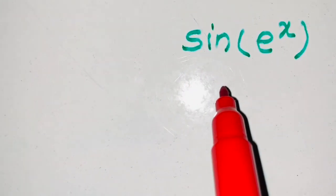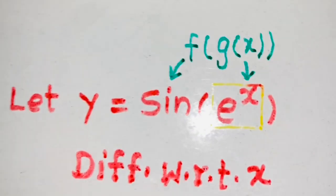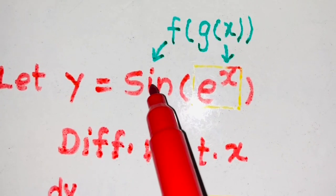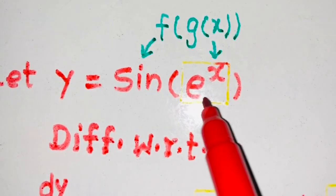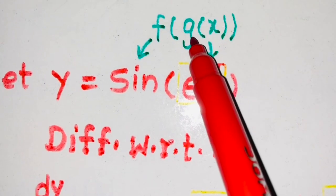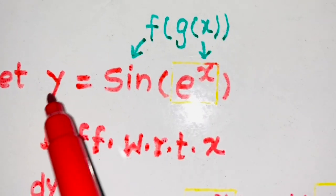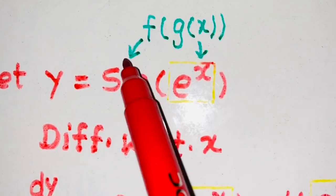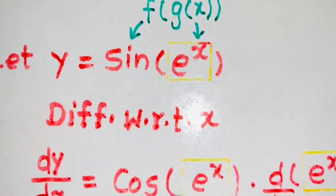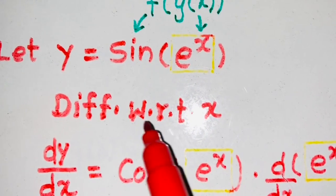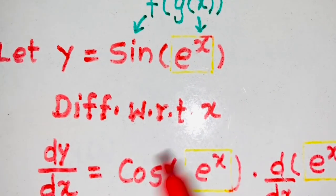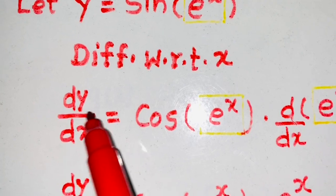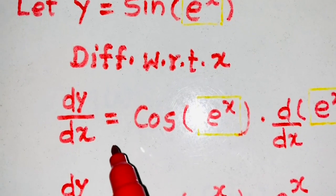Now in simple language, we can say that y is nothing but sine, which is acting as f, of e raised to x, which is acting as g of x. So y is in the form of f of g of x — this is a composite function. Now we have to differentiate y with respect to x, so on the left-hand side we apply the derivative: dy upon dx equals to.